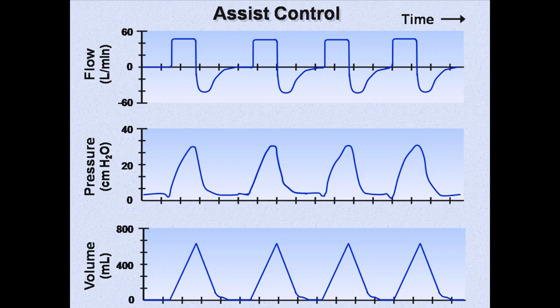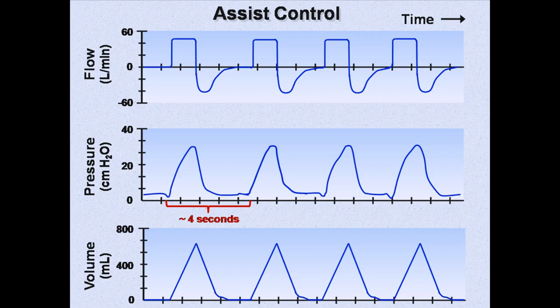In this particular example, in the pressure tracing, you can see the small downward deflections just before the first, third, and fourth breaths. These are the result of the patient trying to take a breath on their own — this small but relatively negative pressure triggers the ventilator to deliver a fully supported breath. The second breath has no such preceding downward deflection, but the ventilator has given a breath anyway because the maximum allowable time without a breath has elapsed. You can see that just over four seconds elapses between the first pressure-triggered breath and the second time-triggered breath, so you can infer that the backup rate is probably about 14 breaths per minute.